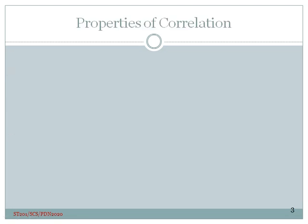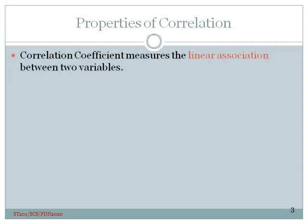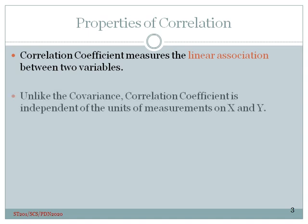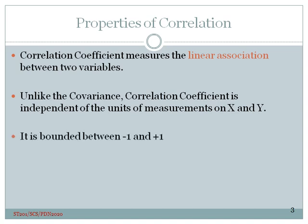These are the properties of the correlation coefficient. It is a measure of linear association between two variables. Unlike the covariance, the correlation coefficient is independent of the units of measurement of x and y. It is bounded between negative one and positive one, meaning the values of rho_xy will always lie in that interval, including both endpoints.